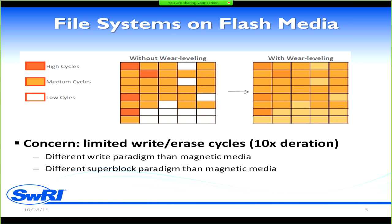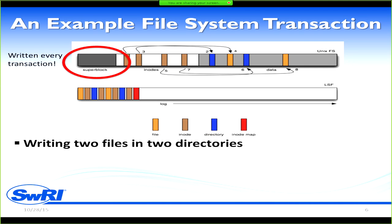This requires a different write paradigm than magnetic media, and also a different superblock paradigm. A superblock is a magical block that lives at the start of a magnetic disk — it gets written on every single transaction: any time you open, read, or write a file. You can't do that with Flash; you'll wear out the first block and the whole device becomes useless. So instead, for every transaction you write out a smooth array of new writes rather than updating in place.